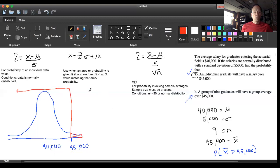I'm going to fill out my Z formula, my central limit theorem formula. Z equals X bar, which is $45,000, minus my population average $40,000, divided by my population standard deviation $5,000 over the square root of my sample size, which is nine.